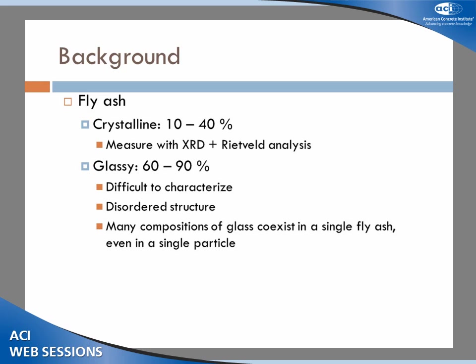Just a quick background on fly ash: you've got anywhere from 10 to 40 percent crystalline material, and that's pretty easy to measure — you just do X-ray diffraction, do a Rietveld analysis, and you can come up with what you have and how much. But glassy phases are more difficult to characterize. They're very disordered in nature and can have an everything-but-the-kitchen-sink kind of composition with lots of variability. Many compositions of glass exist in a single fly ash from particle to particle, and you can even see compositional differences within a single particle.